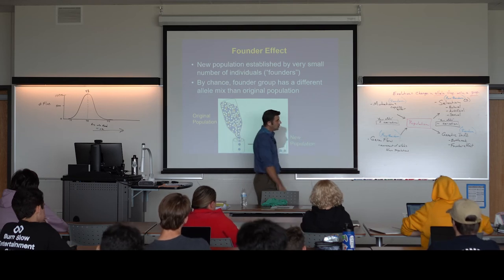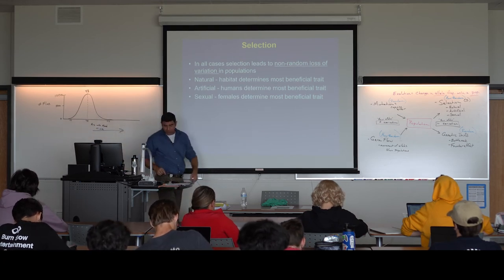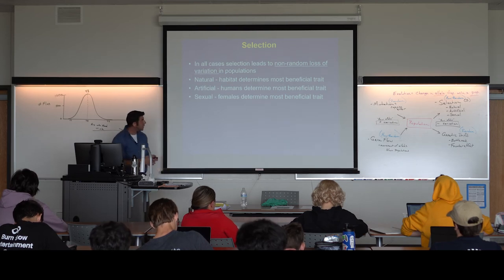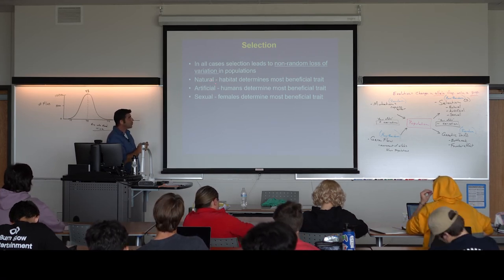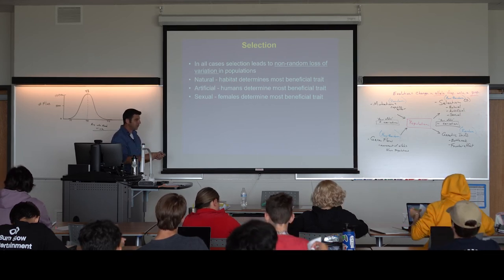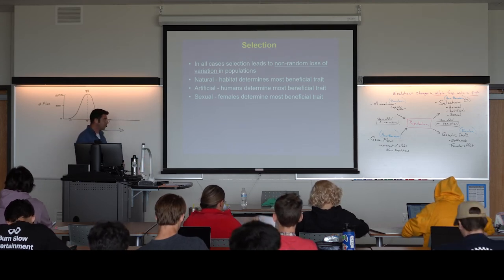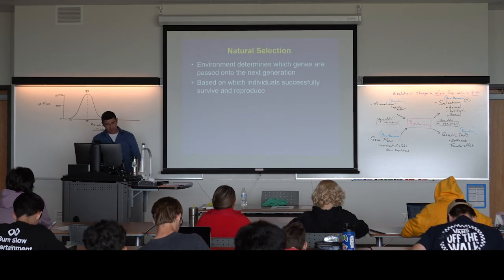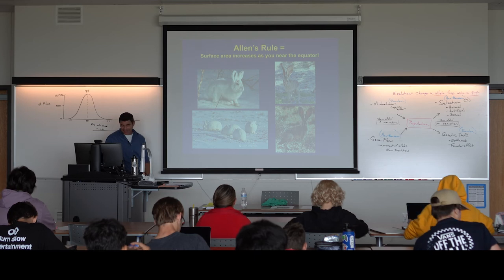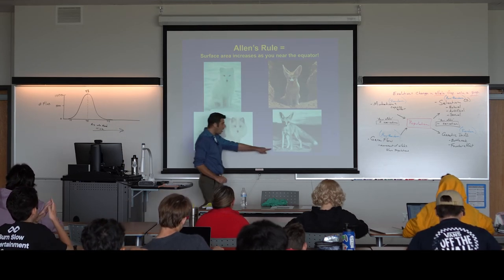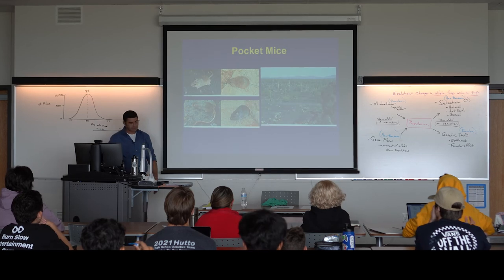At a gene pool level, these frequencies of alleles can fluctuate. All of these forces are constantly at work, whereas individuals are genetically fixed. There are three types of selection. In natural selection, the habitat determines what alleles are beneficial or not. In artificial selection, humans determine what traits are beneficial. In sexual selection, females determine what traits are beneficial.